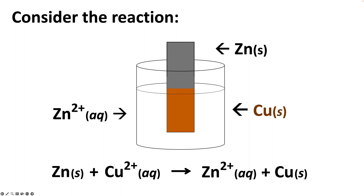It's an oxidation-reduction reaction. Zinc is oxidized — it loses electrons. Copper 2+ is reduced — it gains electrons. We form the products zinc 2+ and copper solid, and all the electron transfer takes place at the surface of this piece of metal. The electrical energy produced is not harnessed; it's dissipated into the solution as heat.